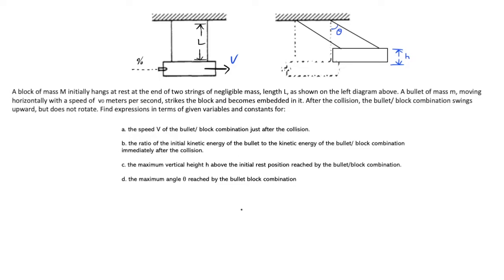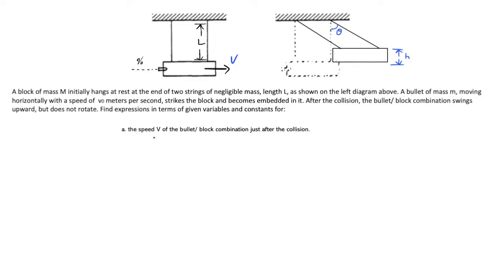I'll take time to explain each algebraic step involved in finding these symbolic, non-numeric variables. Let's begin with the speed V of the bullet-block combination just after the collision. There are two kinds of collisions in physics: elastic and inelastic. In elastic collisions you can use conservation of kinetic energy, but those only apply when objects bounce off each other. In this problem we have an inelastic collision.